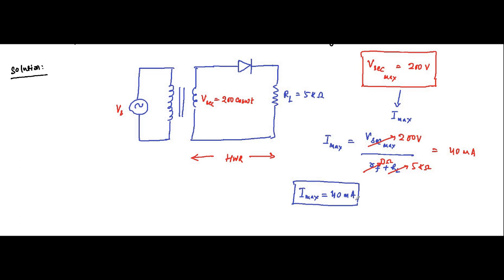Next, the DC value of the current. The DC value is the same as the average value. This is equal to Imax divided by pi, that is 40 milliampere divided by pi, which is 40 divided by 3.14, equal to 12.73 milliampere.